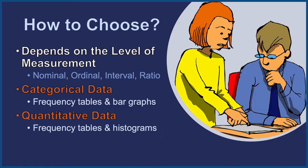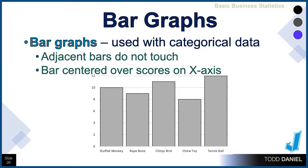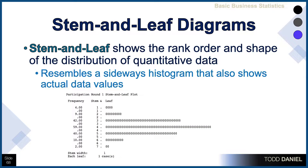We also learned how to create charts and graphs for our data distribution. The type of chart or graph we use depends on the level of the data. When we have categorical data, we use a bar chart — we know it's a bar chart because the bars do not touch. For continuous data, we use a histogram, where the bars do touch and it shows us the shape of the distribution, with all possible values on the x-axis and frequency on the y-axis. We also learned about a stem and leaf diagram — the best of both worlds — which shows us the actual values, the raw scores, their frequency, and gives us a picture of the shape of the distribution.